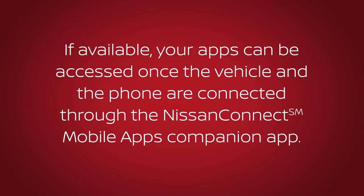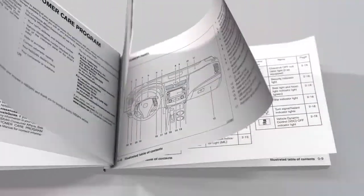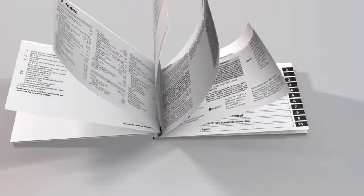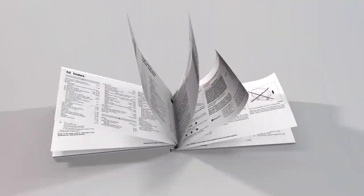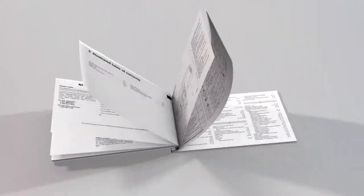If available, your apps can be accessed once the vehicle and the phone are connected through the Nissan Connect mobile apps companion app. Please see your owner's manual for important safety information, system limitations, and additional operating information.